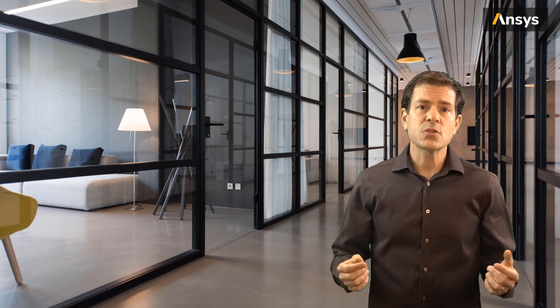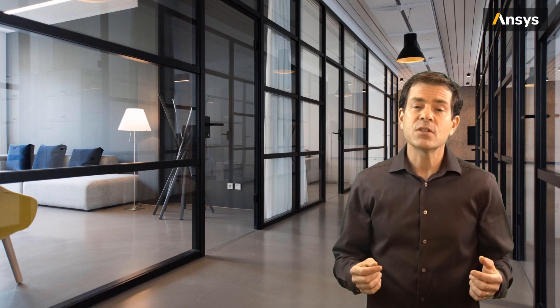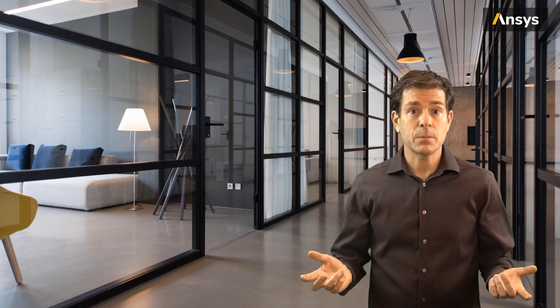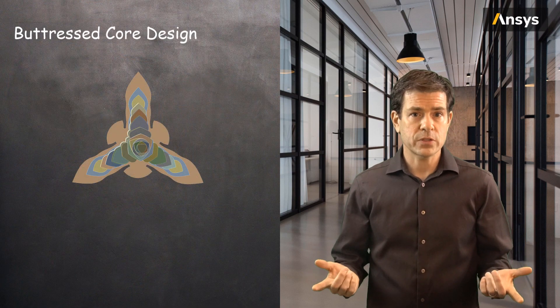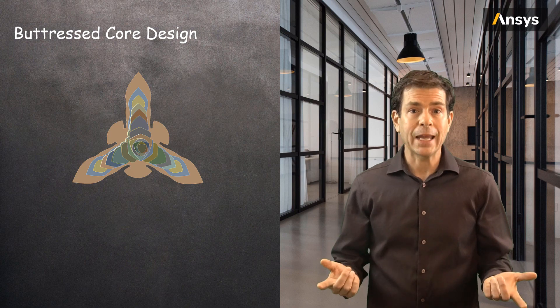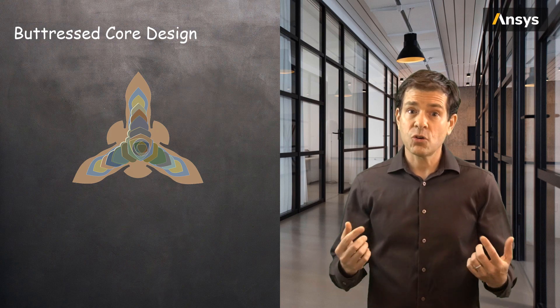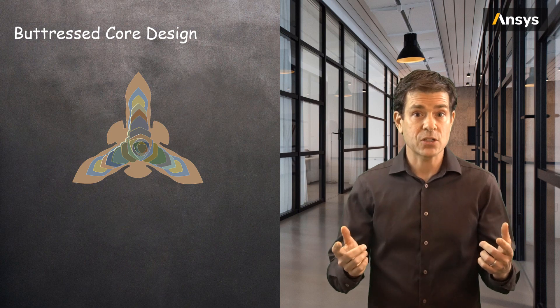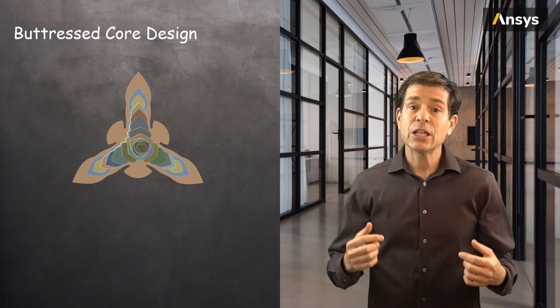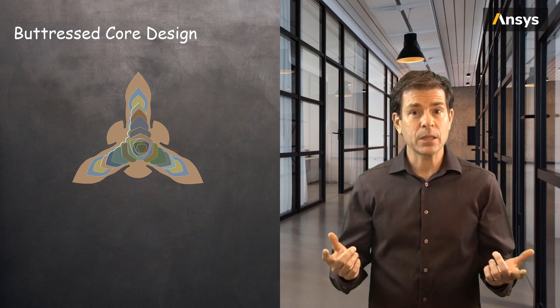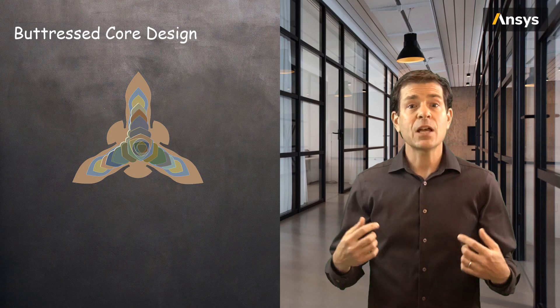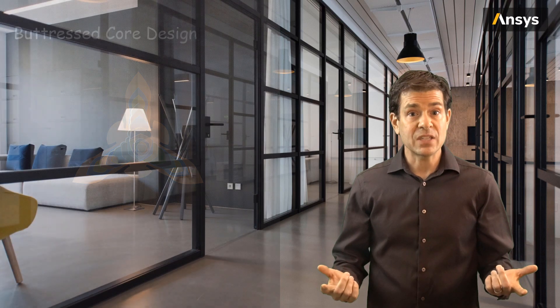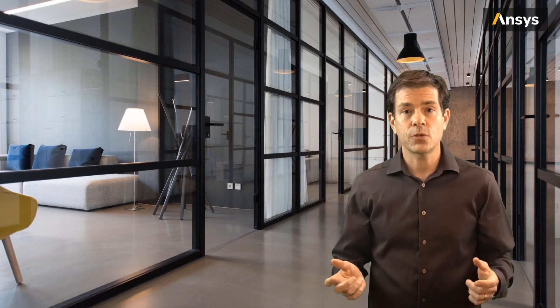What features of the design give the skyscraper its lateral and bending stability and increased stiffness? The building has what is called a buttress core design, in the shape of a Y. This cross-sectional shape provides stiffness in both the bending and torsion directions, and it increases progressively from the top of the building to the bottom. This helps make the building stable even at a height of 830 meters.